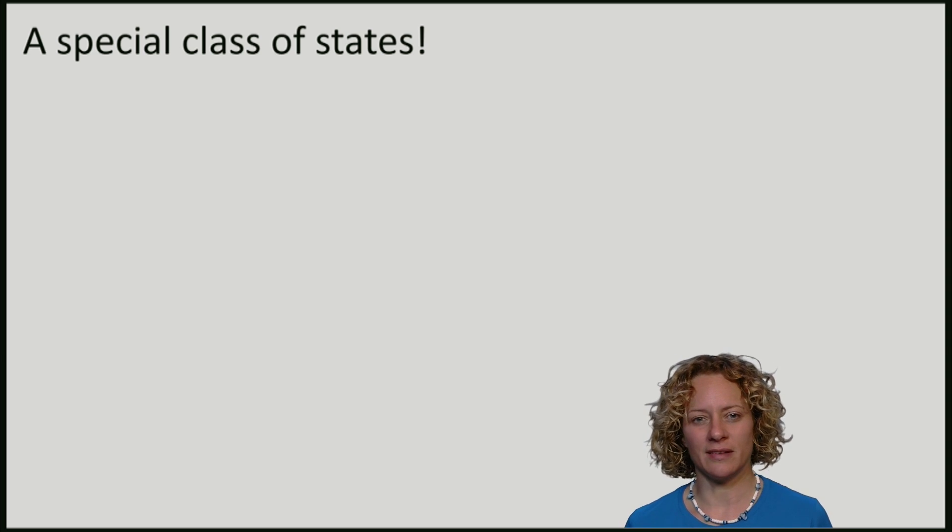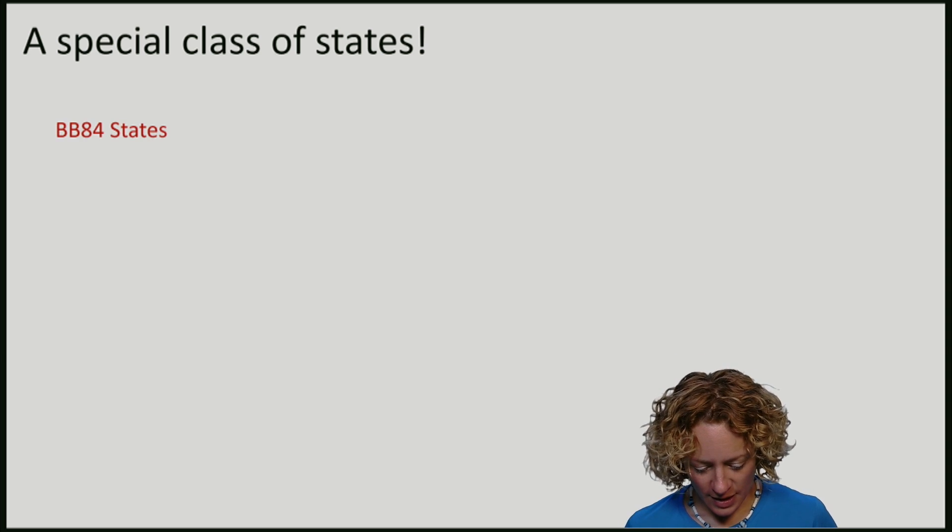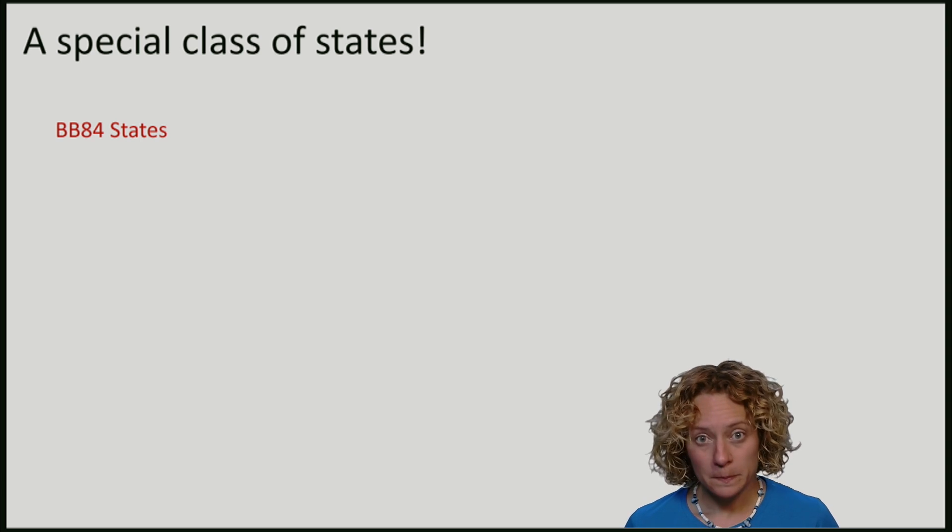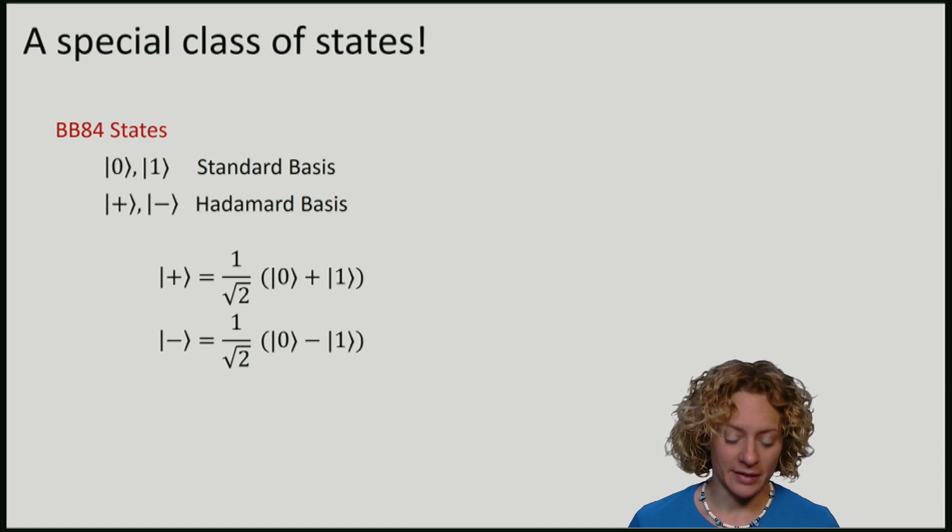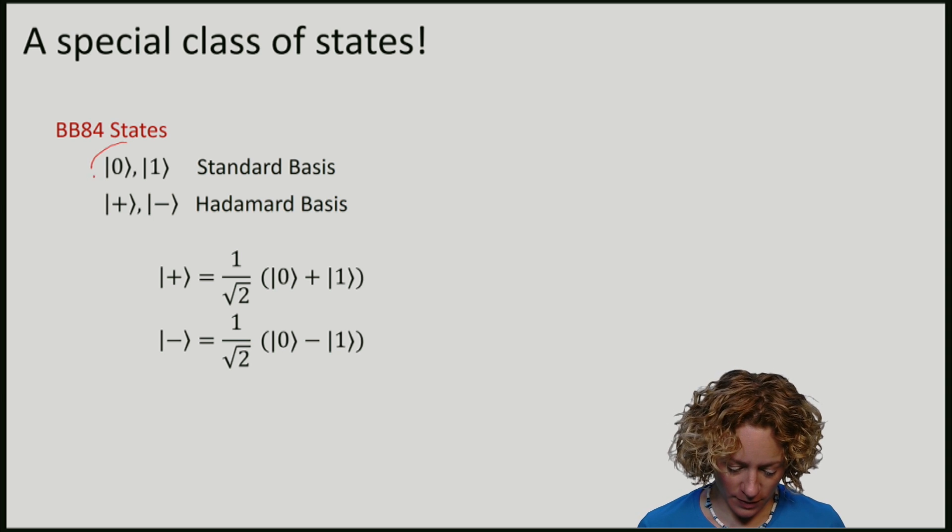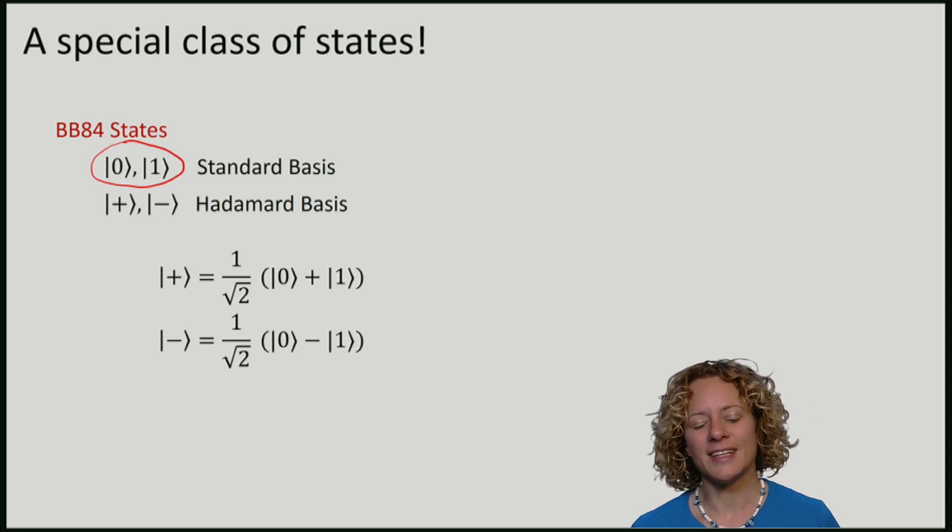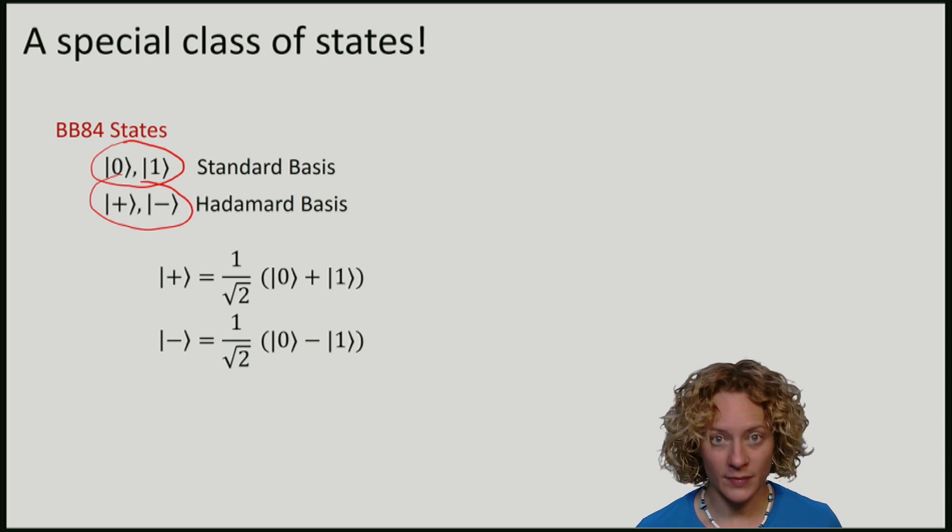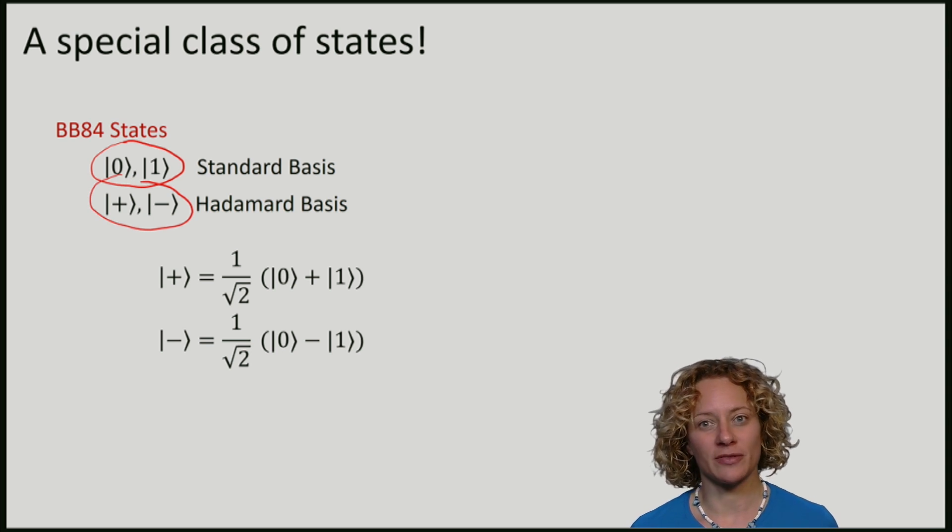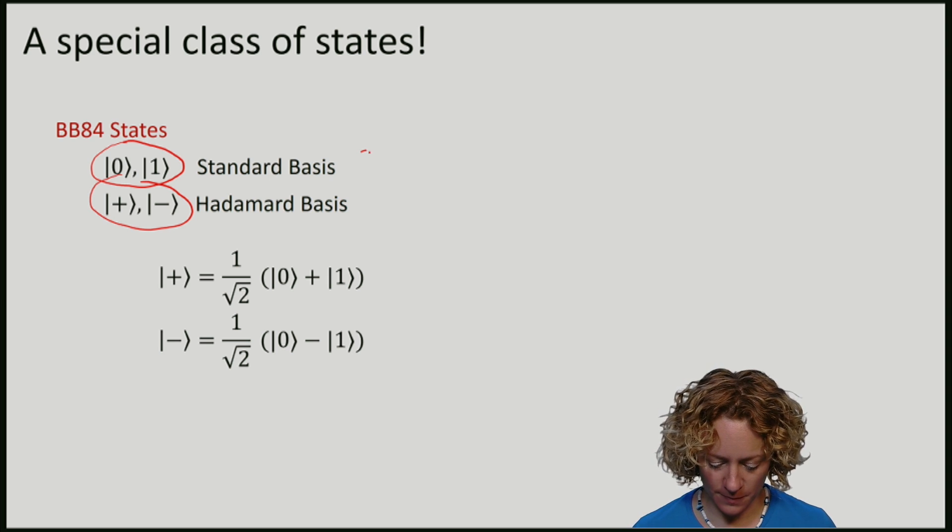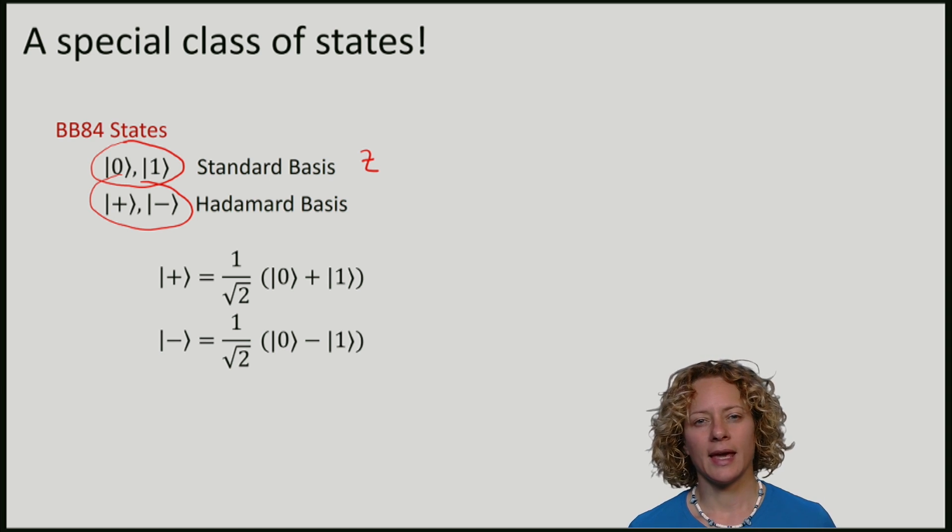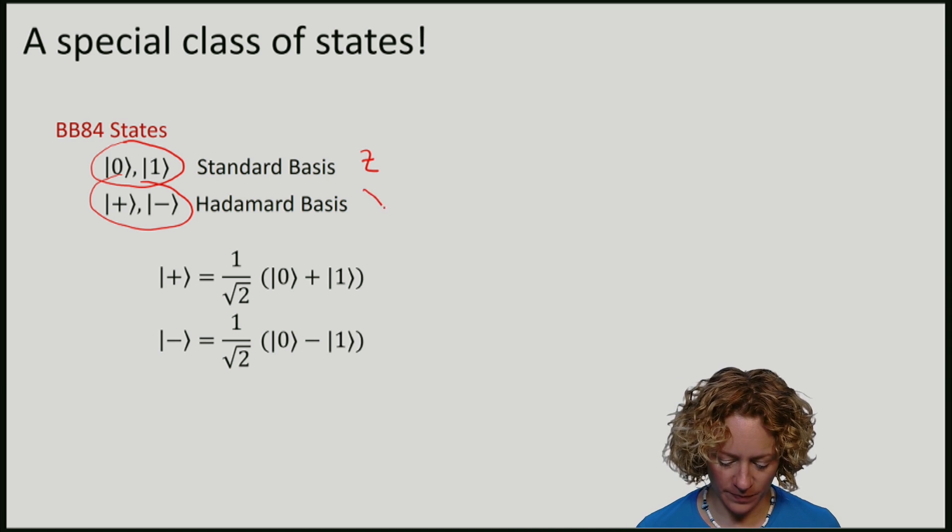So what are these states? There are four of them: the elements of the standard basis plus the elements of the Hadamard basis. The standard basis elements are the eigenstates of Pauli Z, and the Hadamard basis elements are the eigenstates of Pauli X.